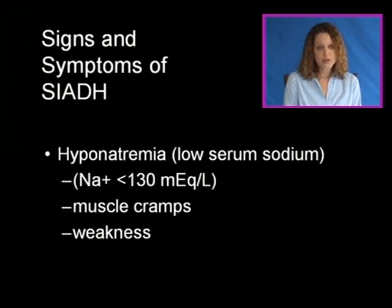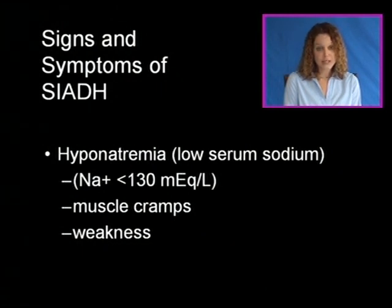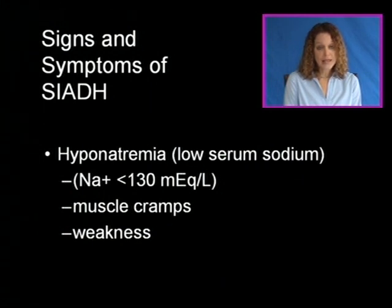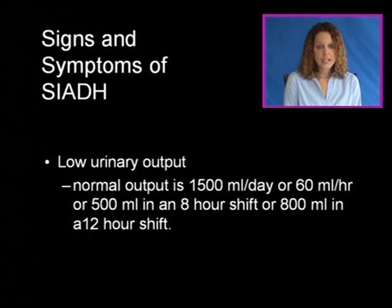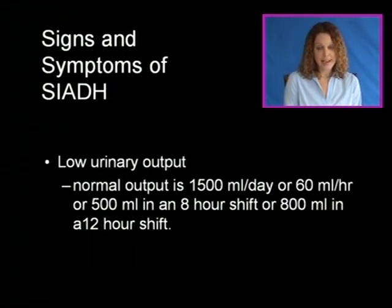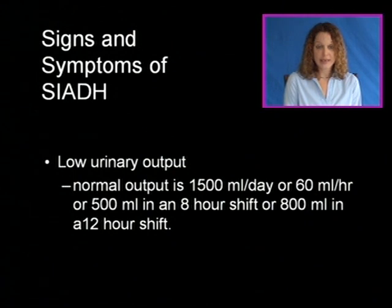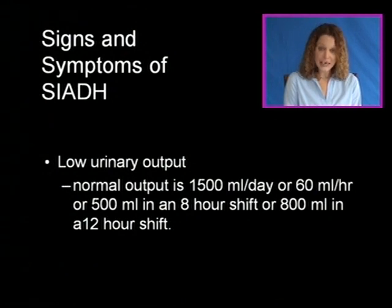Signs and symptoms of SIADH include hyponatremia, which is low serum sodium. The sodium may fall below 130, in which case the patient may present with muscle cramps and weakness. Low urinary output is another symptom. Normal output is about 1500 mLs per day, equivalent to about 60 mLs per hour, 500 mLs in an 8-hour shift, or about 800 mLs in a 12-hour shift.